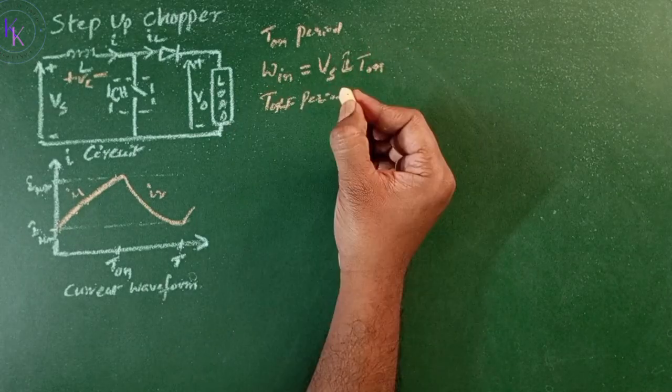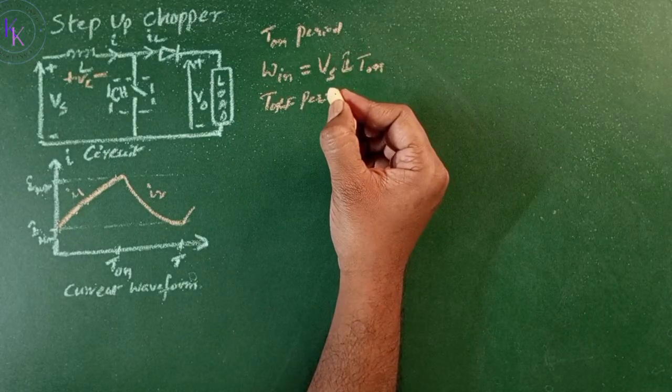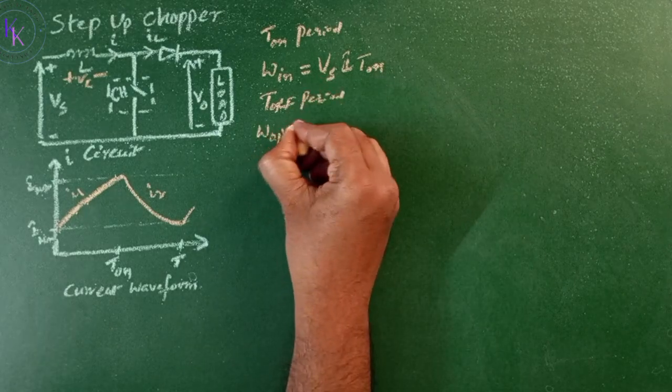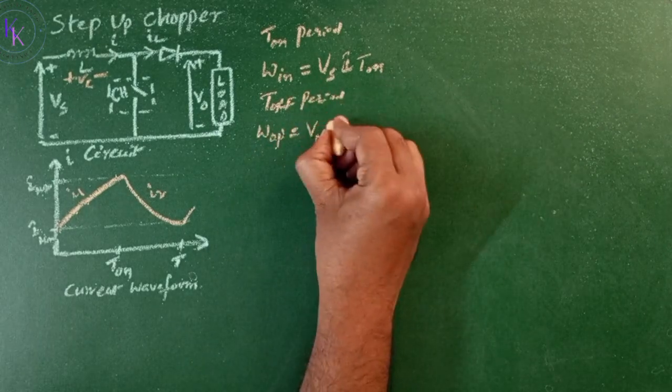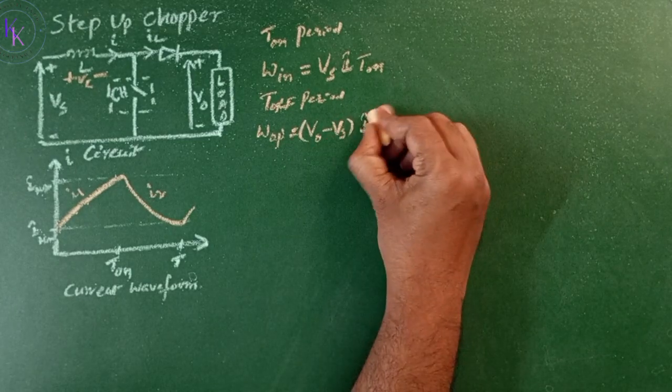During the turn-off, the chopper is opened, and the energy released from the inductor to the load. So W output equals (V0 minus Vs) times I times T off.